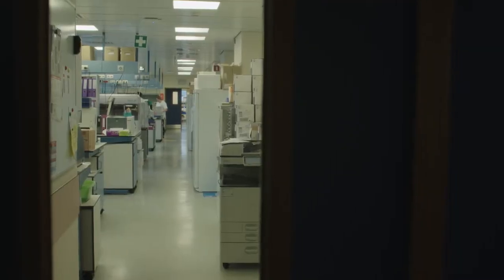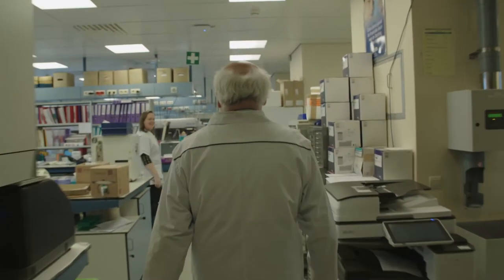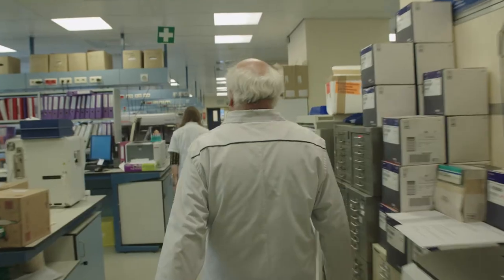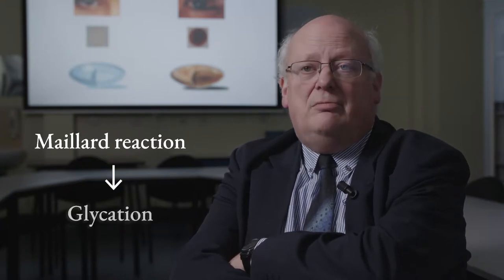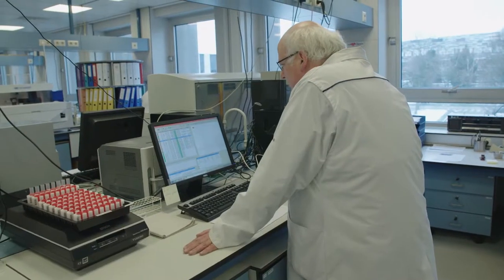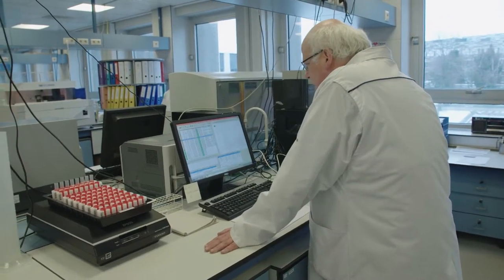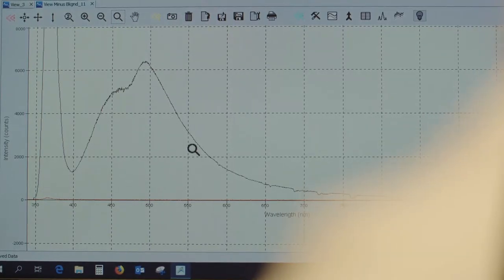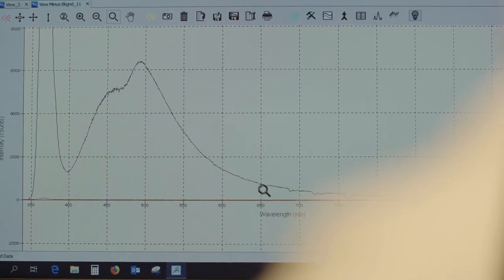We have to realize that cataract is mainly caused by a chemical reaction called Maillard's reaction, which is causing glycation. It is a very slow process in which endogenous sugars of the body, mainly glucose, will react with the proteins of the lens.